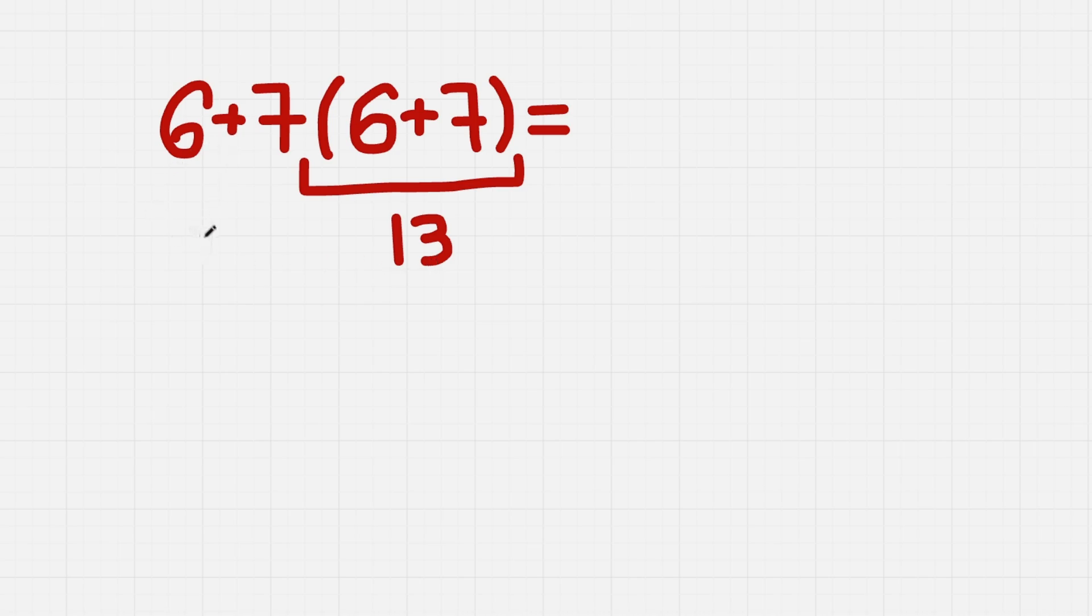So what we have now is 6 plus 7 times 13. Now I guess it's clear that we cannot just add 6 plus 7 because we have a multiplication here. So we need to do this first.